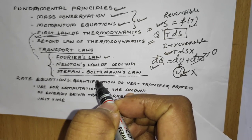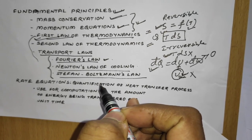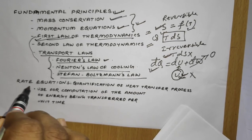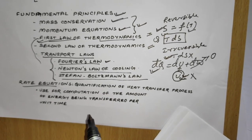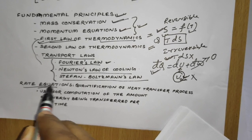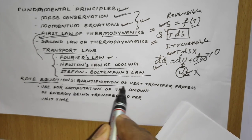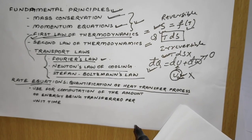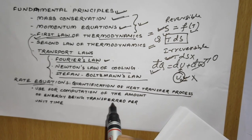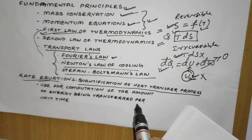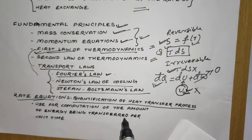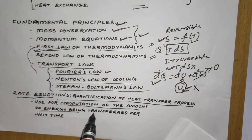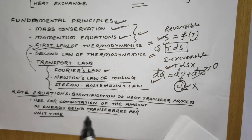How can heat transfer processes be quantified? The answer is rate equations. Rate equations are the process of quantifying heat transfer. The appropriate rate equations quantify heat transfer processes and can be used for computation of the amount of energy being transferred per unit time.